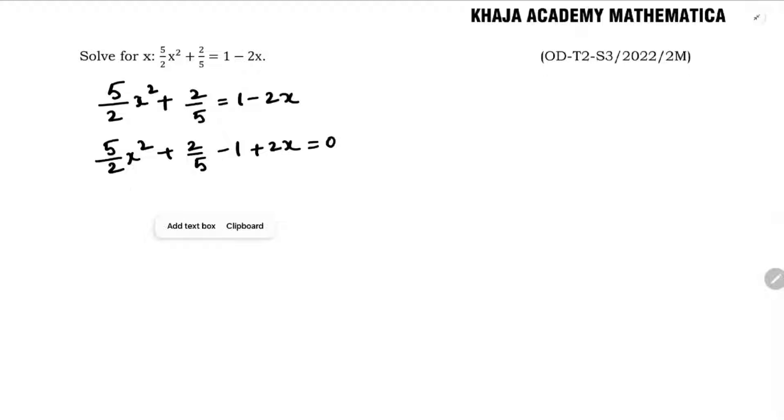Now here, if I will take LCM. LCM is... but before that, rearrange in proper order or directly you can take LCM. LCM is here 10. 2 and 5, LCM is 10. So here we have 2, so I should multiply 5. Here we have 5, so 2. Here it is 1, so you should multiply 10. Here also by 1, so you should multiply 10.